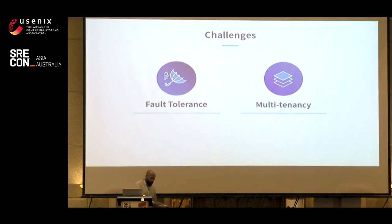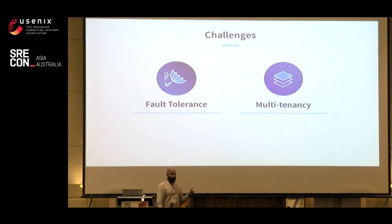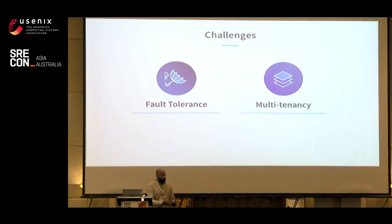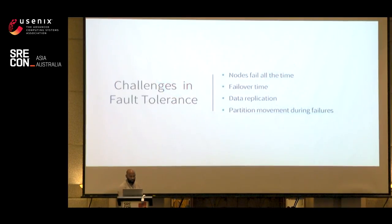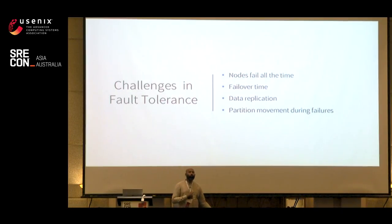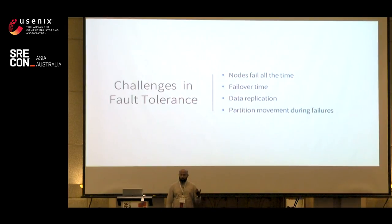I divided the biggest problems into two categories. The first is fault tolerance — how do we deal with different faults in the system? The second is how do we deal with multi-tenancy-related issues. On fault tolerance: nodes fail all the time. Whenever you use commodity hardware, most of the time you run on single power supplies and single disks — no RAID, nothing. Unlike traditional banking systems where each machine has multiple network cards and RAID, distributed commodity systems don't have that.